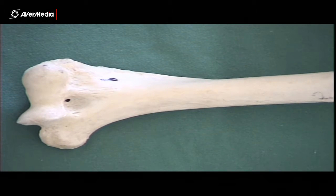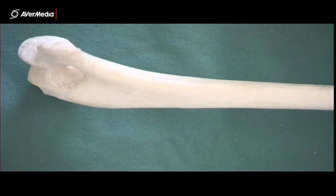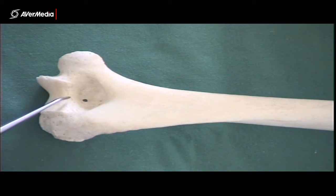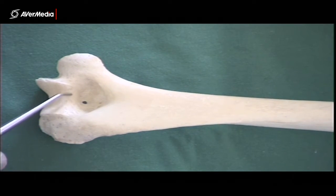Then on the posterior aspect, we can still see the trochlea nicely here, and then we can see the olecranon fossa there.